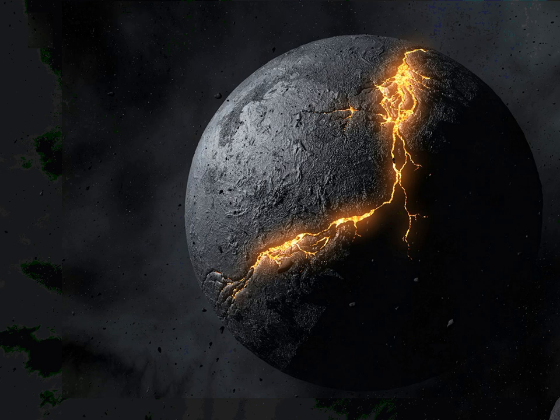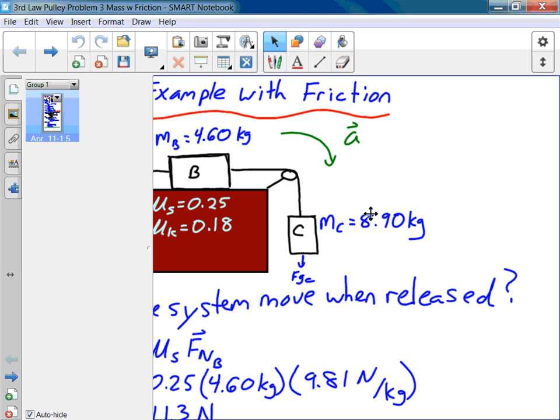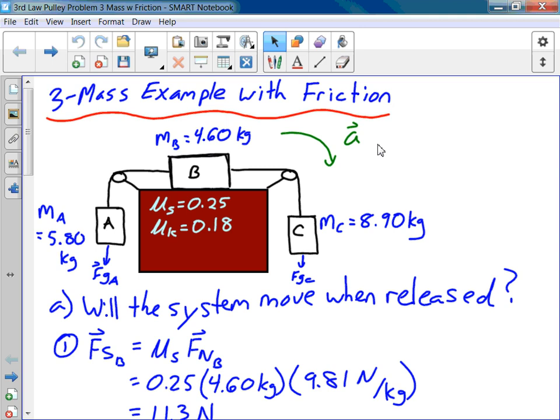Alright, so if you guys forgot what we did overnight, we started off by analyzing a three mass system, so two dangling masses and one mass that was on the desk or whatever.